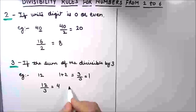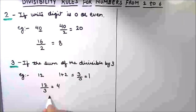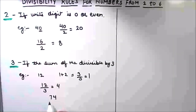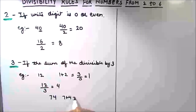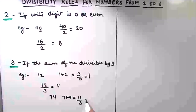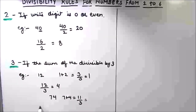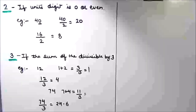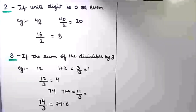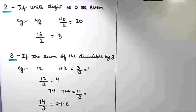Let's take one more example with a bigger number: 74. We check whether the sum of the digits is divisible by 3. 7 + 4 = 11, and 11 is not fully divisible by 3, so 74 is not divisible by 3. The divisibility rule for number 3 is: the sum of the given digits should be divisible by 3 for the number to be divisible by 3.